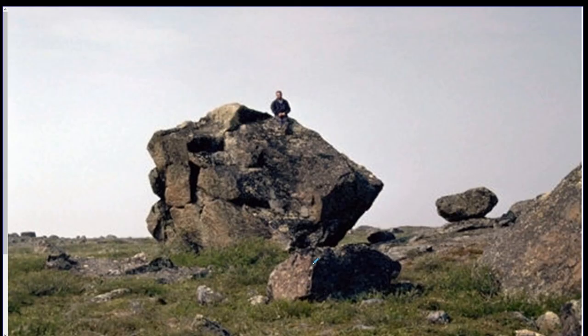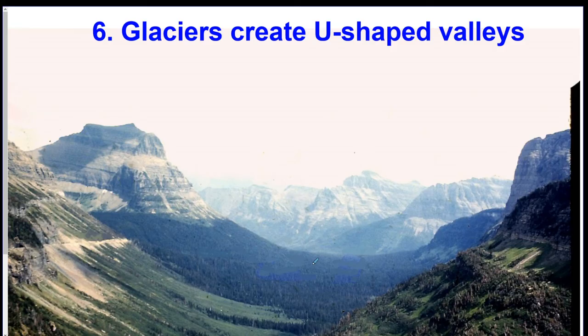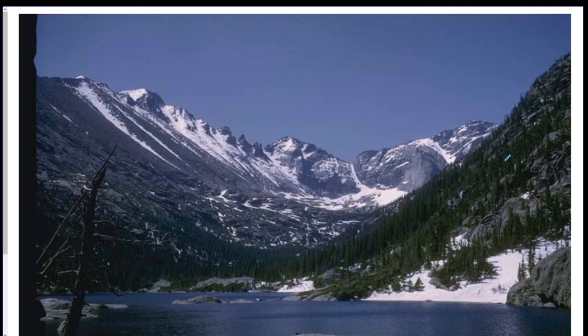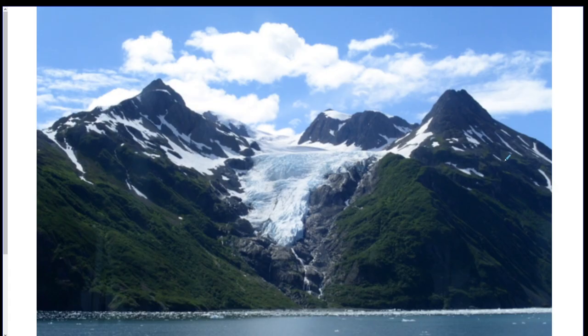Glaciers sometimes leave giant boulders in places — nothing else can move a boulder that size except a glacier; wind and water can't do it. Glaciers create U-shaped valleys. See that nice U curve? Rivers create V-shaped valleys; glaciers create U-shaped valleys. Here are more examples of U-shaped valleys, and here is a mountain glacier — but there's your U.